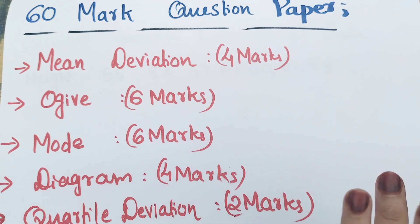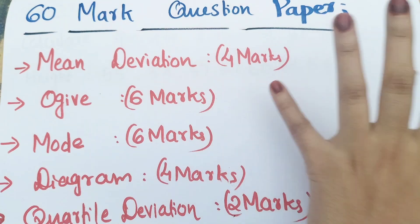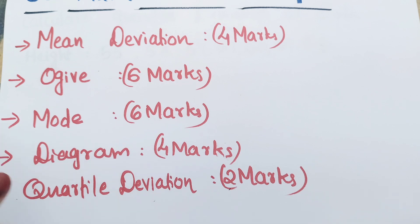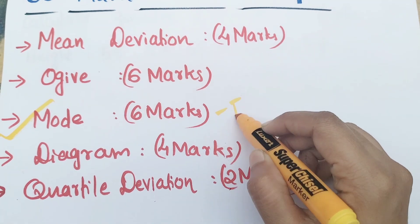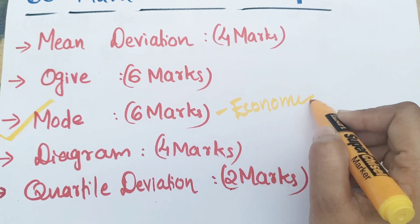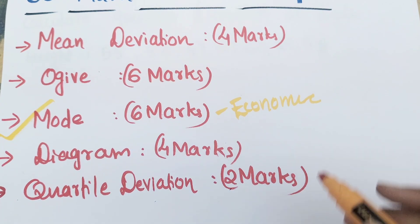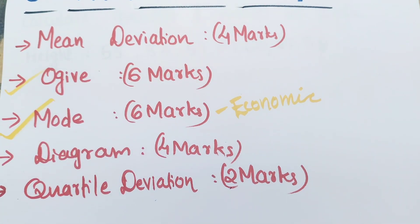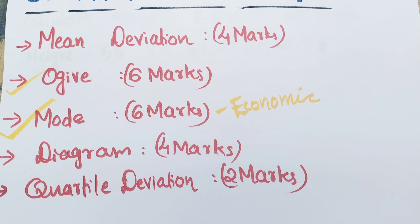I showed you a lot of question paper in 60 marks — mean deviation, Ogive, mode, diagram, quartile deviation. Now there are 3 videos that you missed. That's why you will continue our series. There are 3 videos on economics. In the description box, there is a link. Ojive video is missed. Diagrams, histograms — the important histogram.